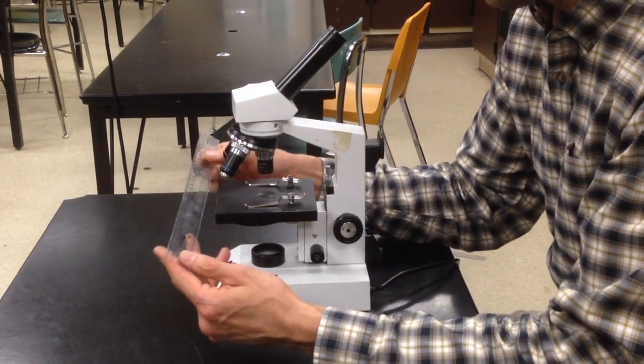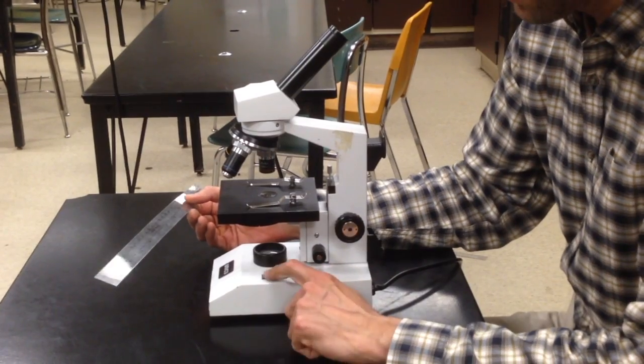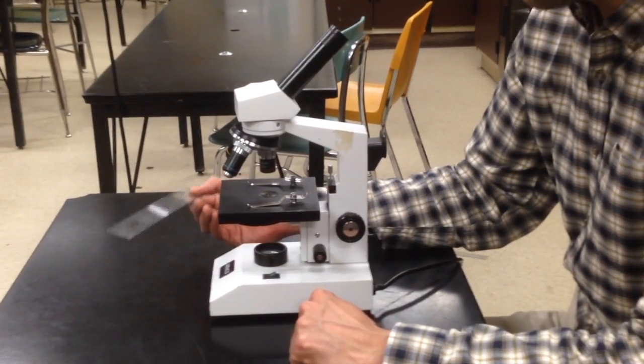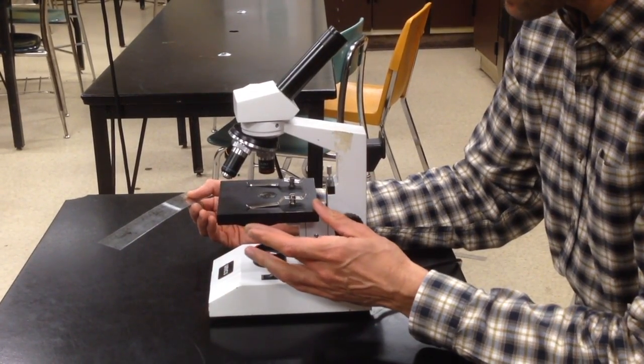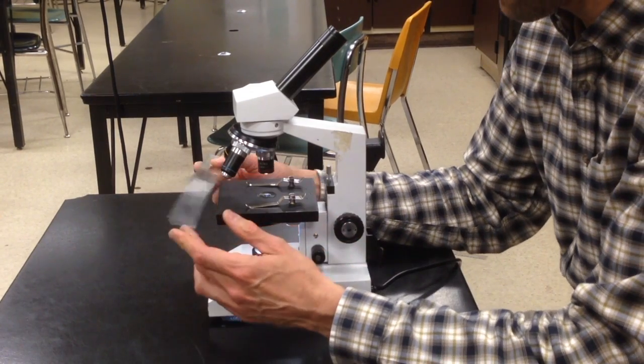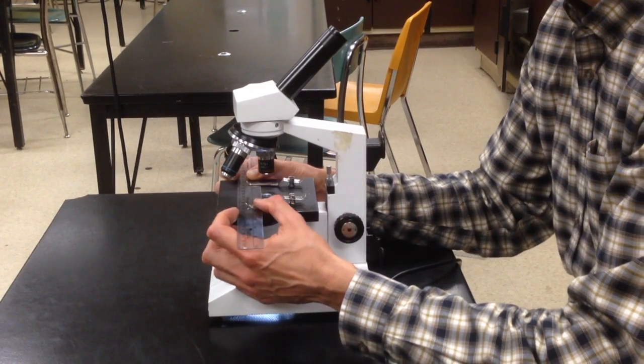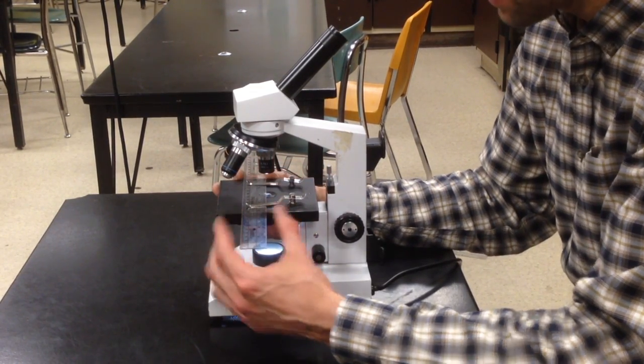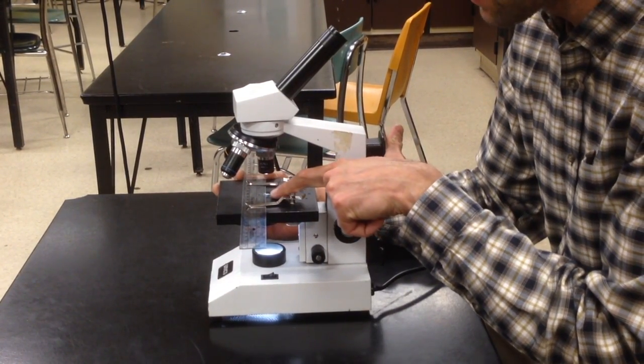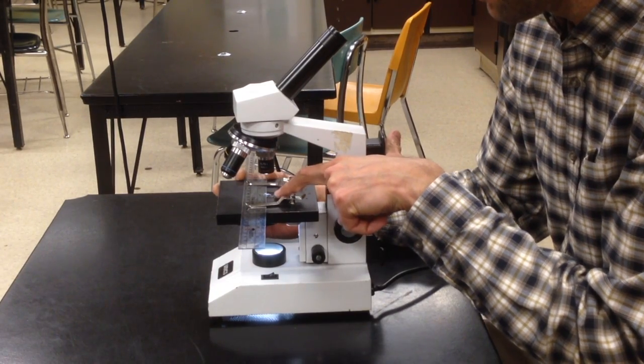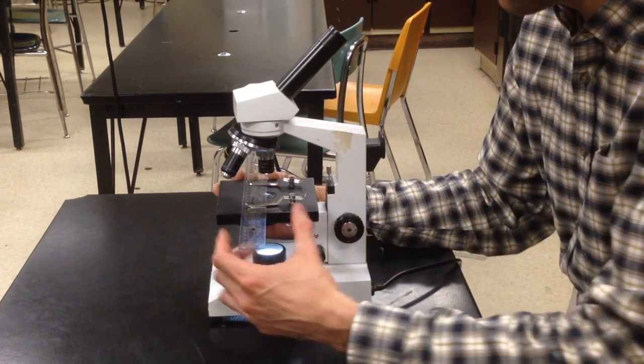When you put your ruler under your microscope, first of all make sure the stage is down and you're on low power. You want to turn your light source on, adjust your diaphragm, and make sure it's clicked in at a good setting. When you slide your ruler on, make sure it's right side up, otherwise you're gonna have some issues. Slide it so that the edge of the ruler is right halfway through the opening in the stage of your microscope.